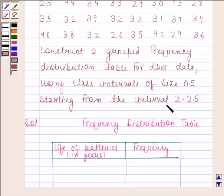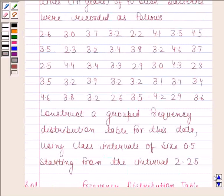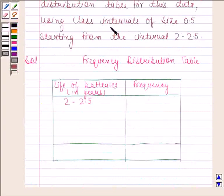Now in the question, we are given that we have to take the first class interval as 2 to 2.5. Look at the data. The maximum value in this data is 4.6, and it is also given that class intervals are of size 0.5.